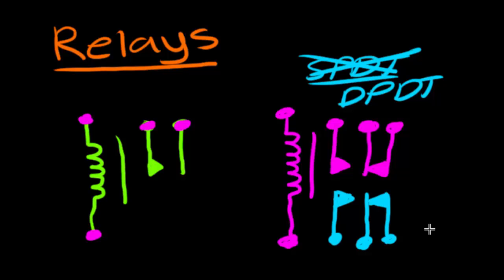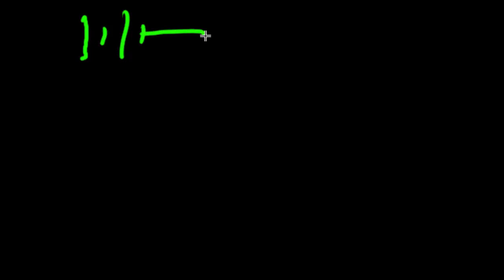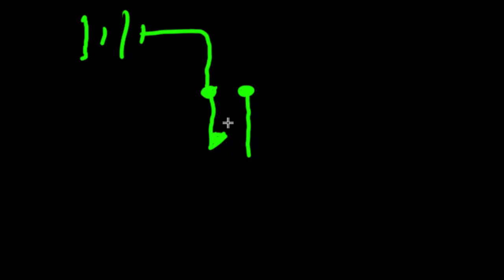Let's go ahead and design a quick little circuit with relays. We're going to have a battery, and from the negative side of the battery we'll connect it to a relay — a single pole single throw relay. We'll have our two switching terminals right here. Relays are always drawn in their off position, whenever the electromagnet isn't on. So in this case the connection is open — it's not making a connection when the electromagnet is off.